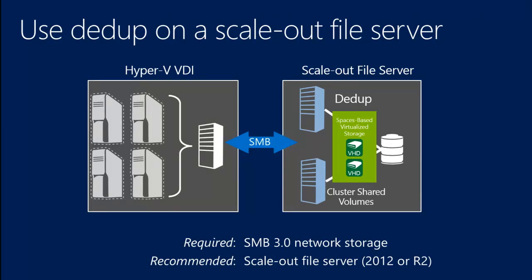How many of you know what scale-out file server is in Server 2012? We introduced a new file server type in Server 2012 that allows, sitting on top of clustered shared volumes, a clustered file server on CSV. Every node in the cluster can access all the data on any of the CSV volumes. A client — the Hyper-V host in this instance — can come into any one of those nodes. We can now balance that automatically across multiple hosts on a per-share basis. The wizard will just ask you: do you want a general purpose file server or a scale-out file server?